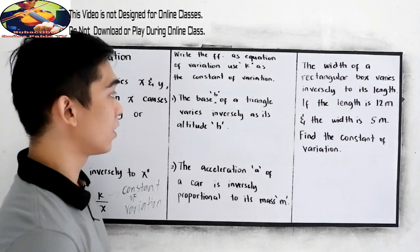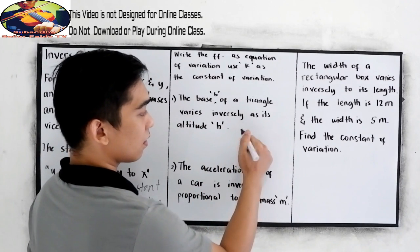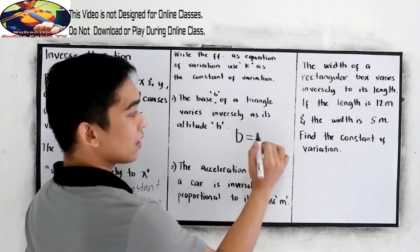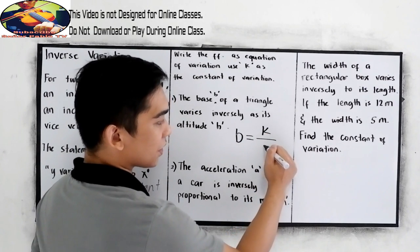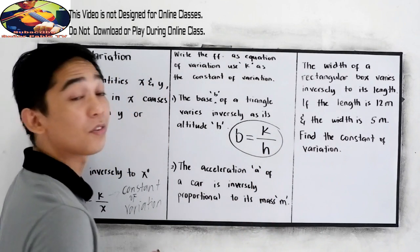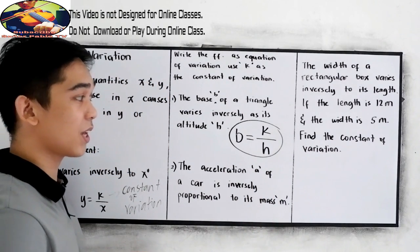which is H. So B varies inversely at its altitude, so B equals K over H. This will be the equation of our variation.